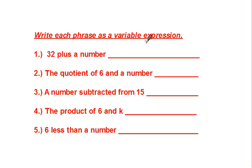Write each phrase as a variable expression. 32 plus a number. So you can use any variable you need. A lot of times people use n for an unknown number or x. The quotient of 6 and a number. So that would be 6 divided by n. We could also write this with a fraction bar, 6 divided by n. A number subtracted from 15. That means we need to have the 15 first. And then we subtract the n from it.